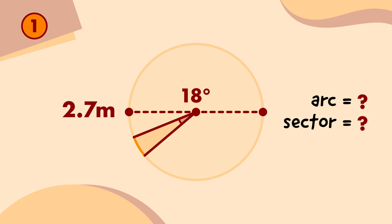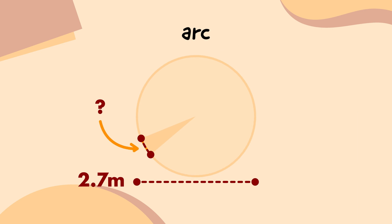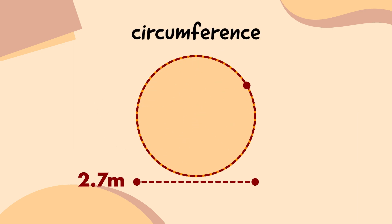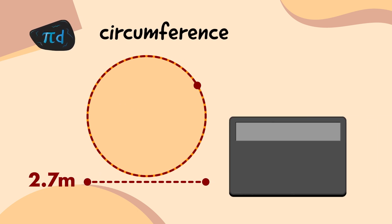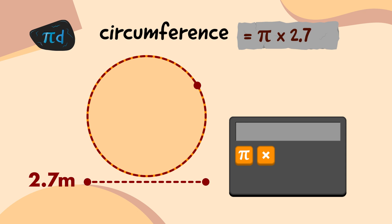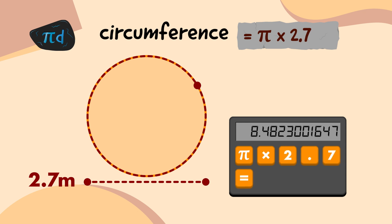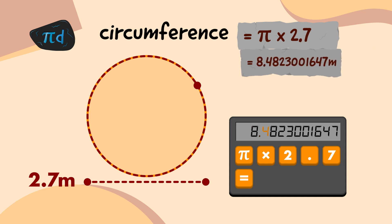I'll start by working out the length of the arc that the vines cover. To do that, I first need to work out the circumference of the whole emblem, which is πd. So on my calculator, I'll multiply 2.7 by π — I'll press the π button, press the multiply button, type 2.7, and press the equals button, which tells me that the circumference of the first emblem circle is 8.4823001647 metres.